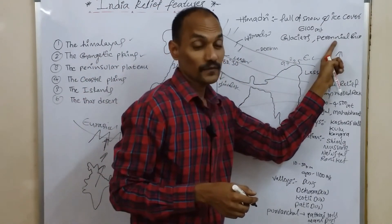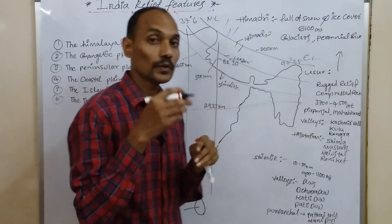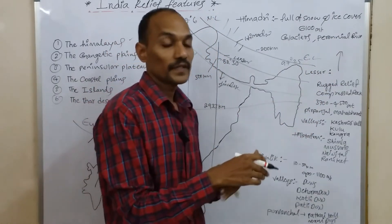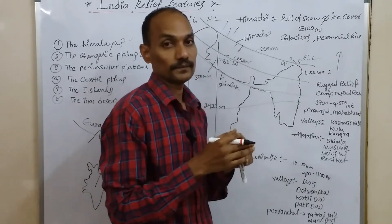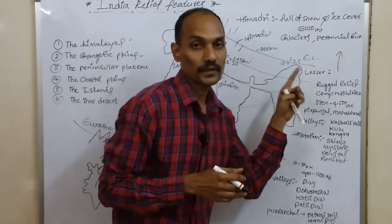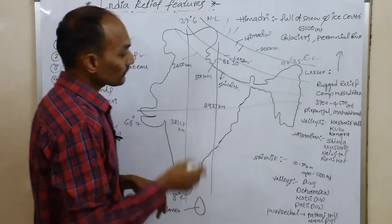These glaciers are the source for perennial rivers. Perennial rivers means rivers that flow throughout the year. They never end, even in summer. So they are called perennial rivers.